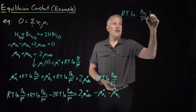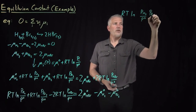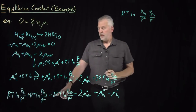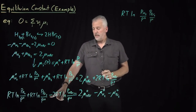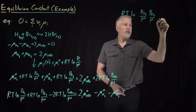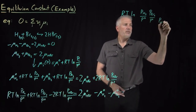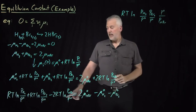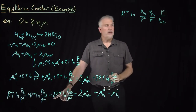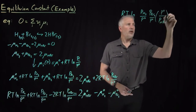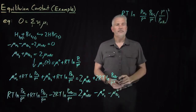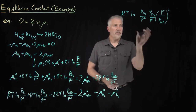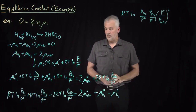So that's going to be RT times the natural log of (P_H₂/P°)·(P_Br₂/P°) divided by (P_HBr/P°)², since the negative sign means the HBr term goes into the denominator and the factor of 2 means it gets squared. I've combined all those terms on the left side into one natural log term.